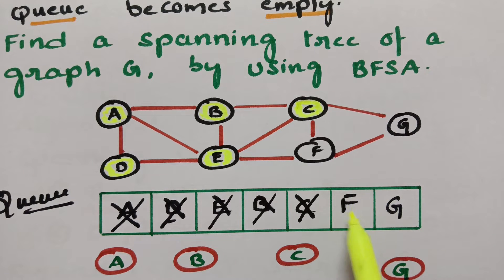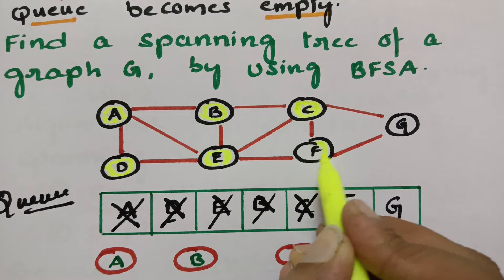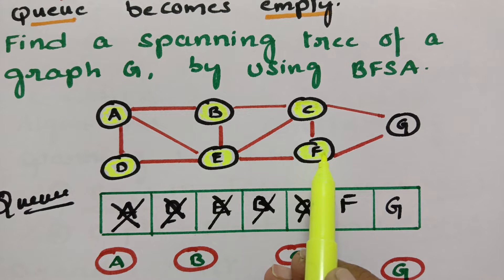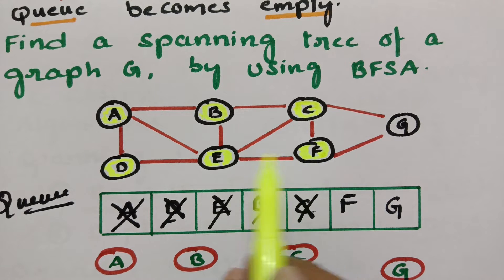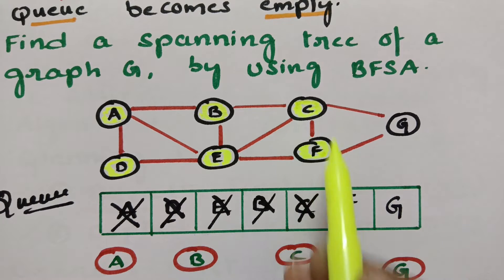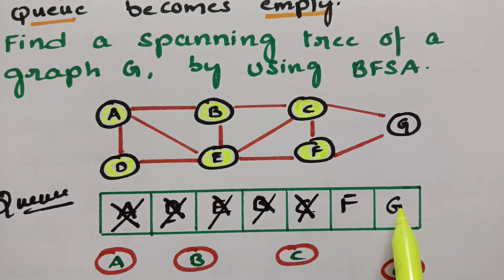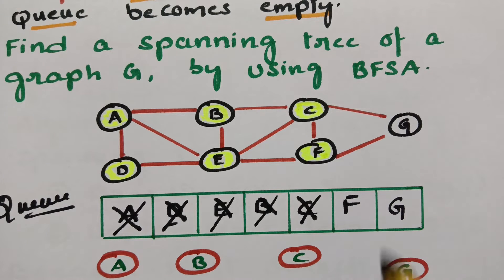The next newly inserted vertex is F. So I have to visit F. After visiting, I have to explore — how many adjacent vertices are there? E is already posted. C is already posted. G is also already posted. So now I have to delete F from the queue.